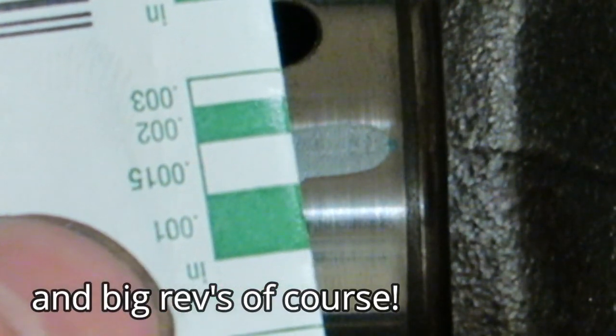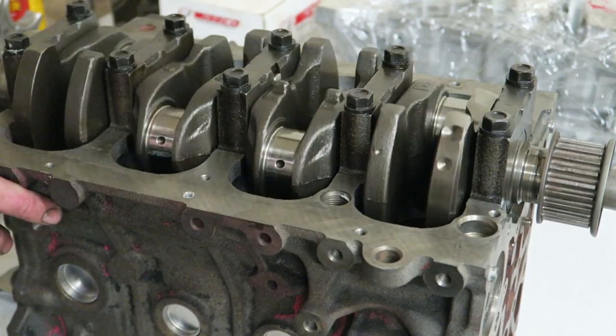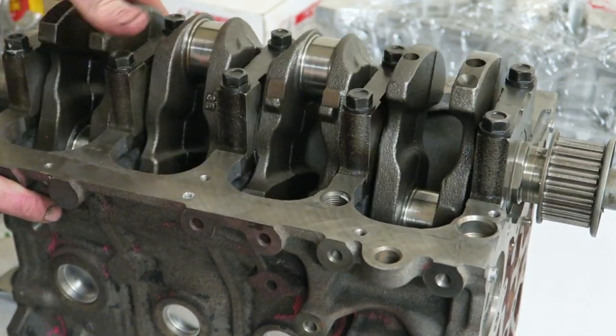So first of all we're going to take the crank down to the shop and get them to machine the crank so we can have at least two thou clearance and about two and a half thou in the mains, and that should be plenty. We're just going to get standard sized bearings and put it all back together and see how it goes.